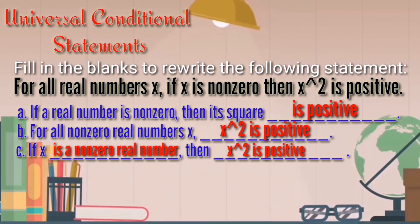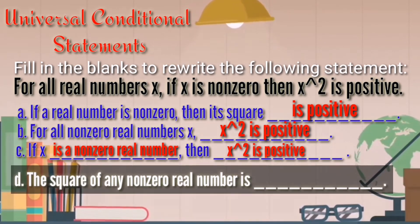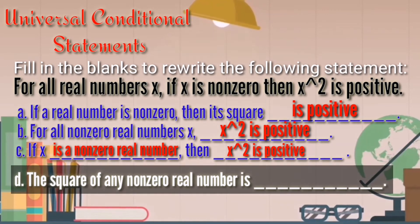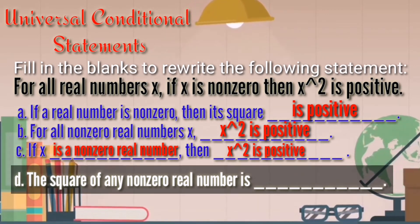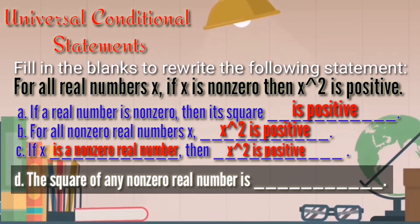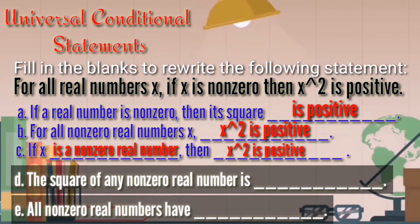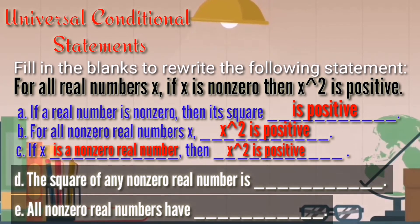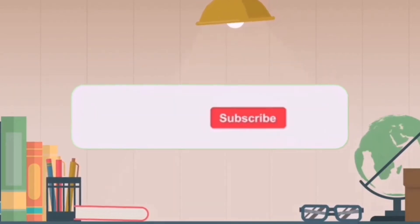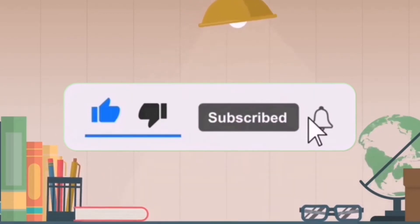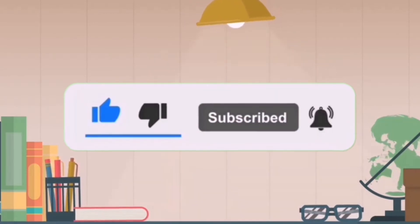Now it's your turn. Statement D: 'The square of any non-zero real number is blank.' And the other one: 'All non-zero real numbers have blank.' Comment down your answer. Before we continue this lesson, don't forget to like, subscribe, and hit the bell for more updates.